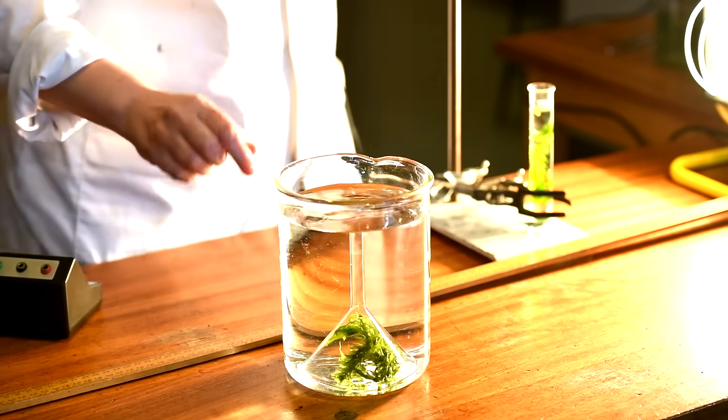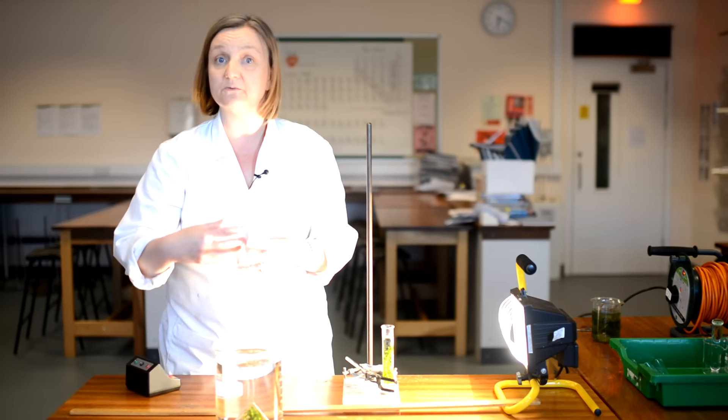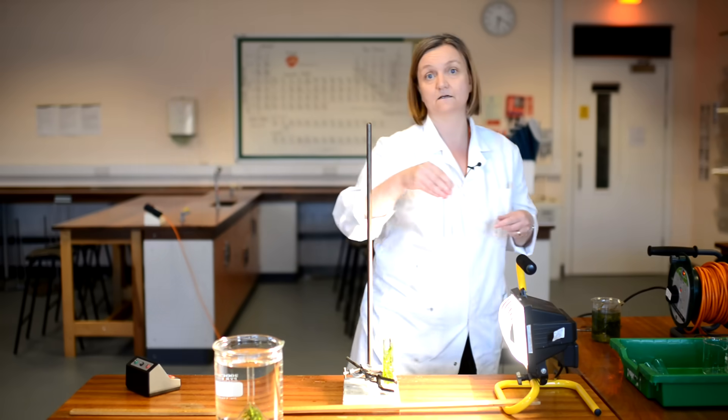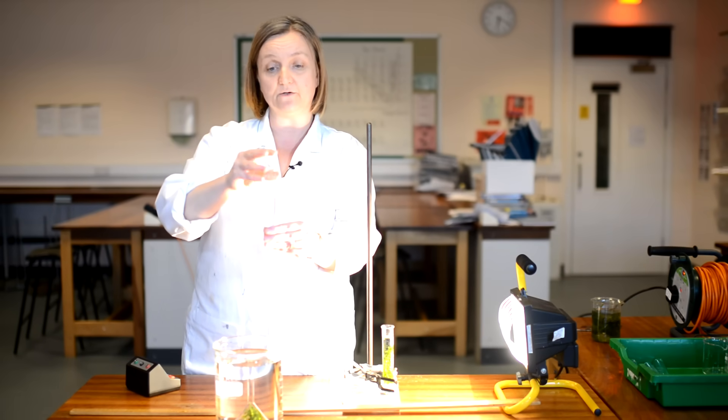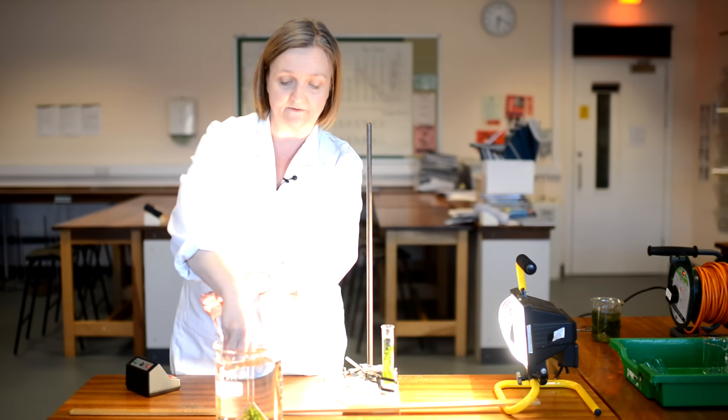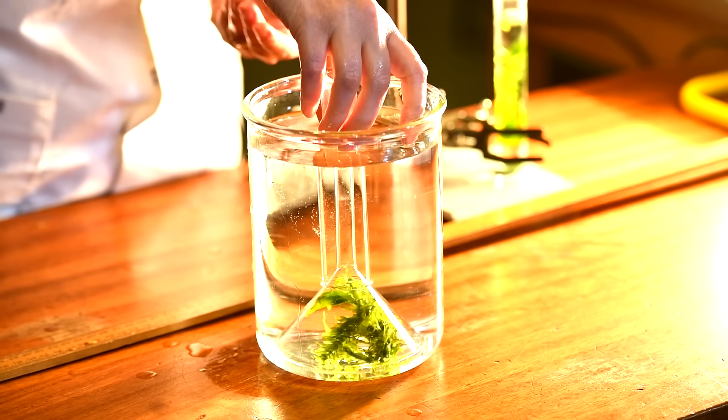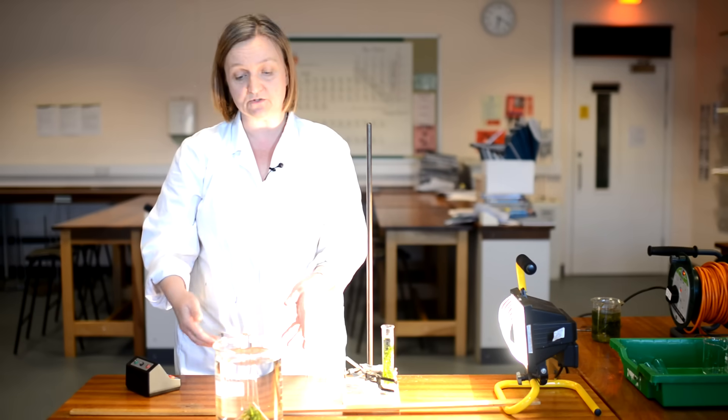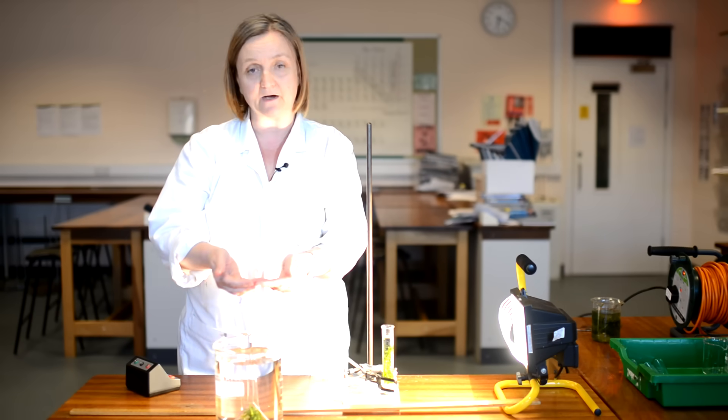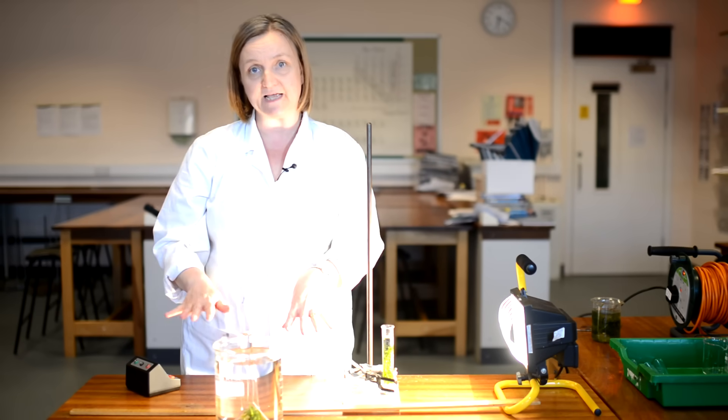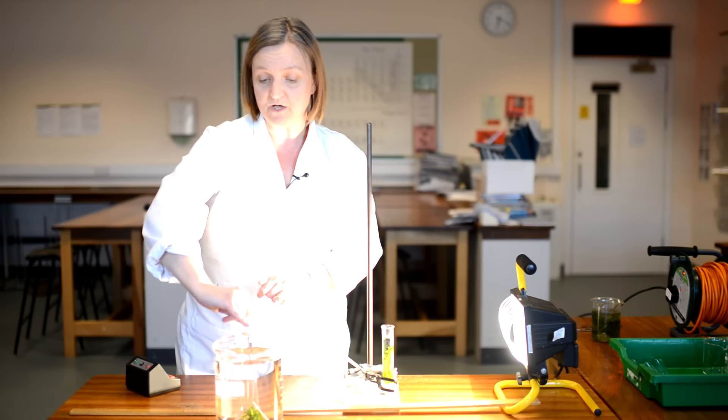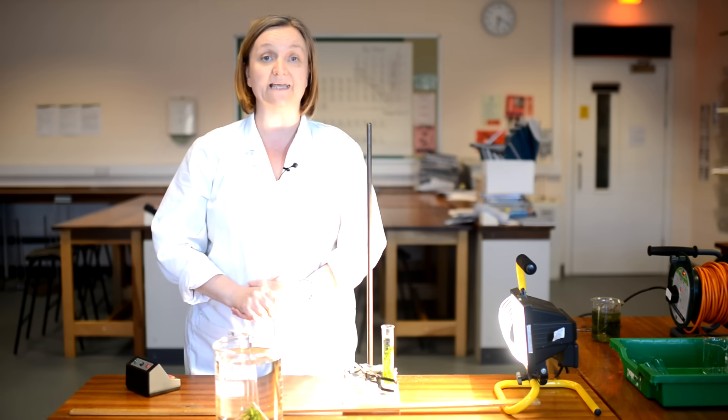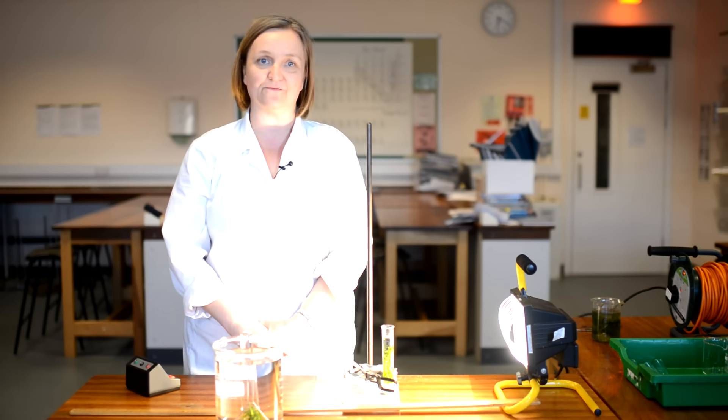Now, obviously, again, with the light source close by, the pond weed will start to photosynthesize. But to collect the oxygen, I need to take a boiling tube full of water, turn it upside down and place that over the top of my funnel. And now, as the bubbles of oxygen are produced, rather than just disappearing into the air, they will pass into the boiling tube, displace the water, and then after a few hours you should have collected enough oxygen that you can either measure its volume or you can test with a glowing splint, which should relight to prove that it's oxygen.